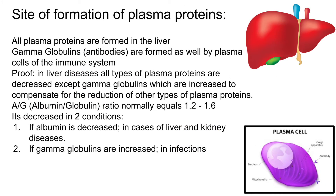The site of formation of plasma proteins. All plasma proteins are formed in the liver. Gamma globulins are antibodies, which are formed as well by plasma cells of the immune system. Here's some proof: in liver diseases, all types of plasma proteins are decreased, except gamma globulins, which are increased to compensate for the reduction of other types of plasma proteins.